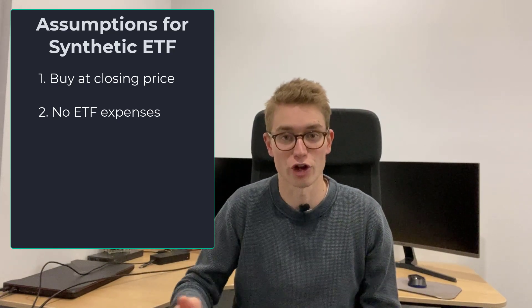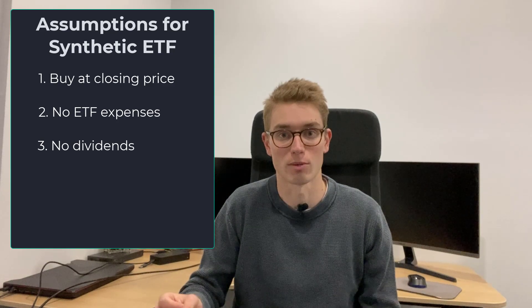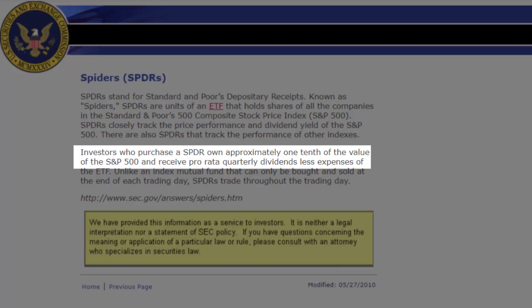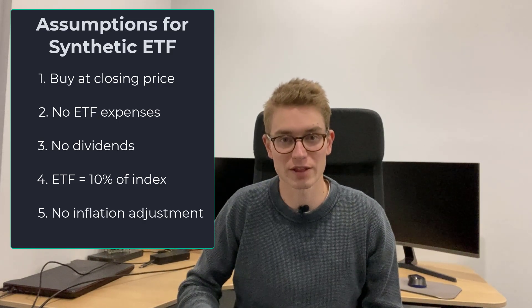Let's now consider those 833 scenarios and look at the distributions and returns. Going through the assumptions for creating a synthetic ETF back to 1929: first, we can buy at the closing price on a particular date; second, we have no management fees or expenses connected with this ETF; third, we do not take dividends from these investments over time, which somewhat nets off the absence of fees. The synthetic ETF holds one-tenth of the value of the index, in line with how the SPY ETF is created. We're also not adjusting for inflation — these are nominal values.